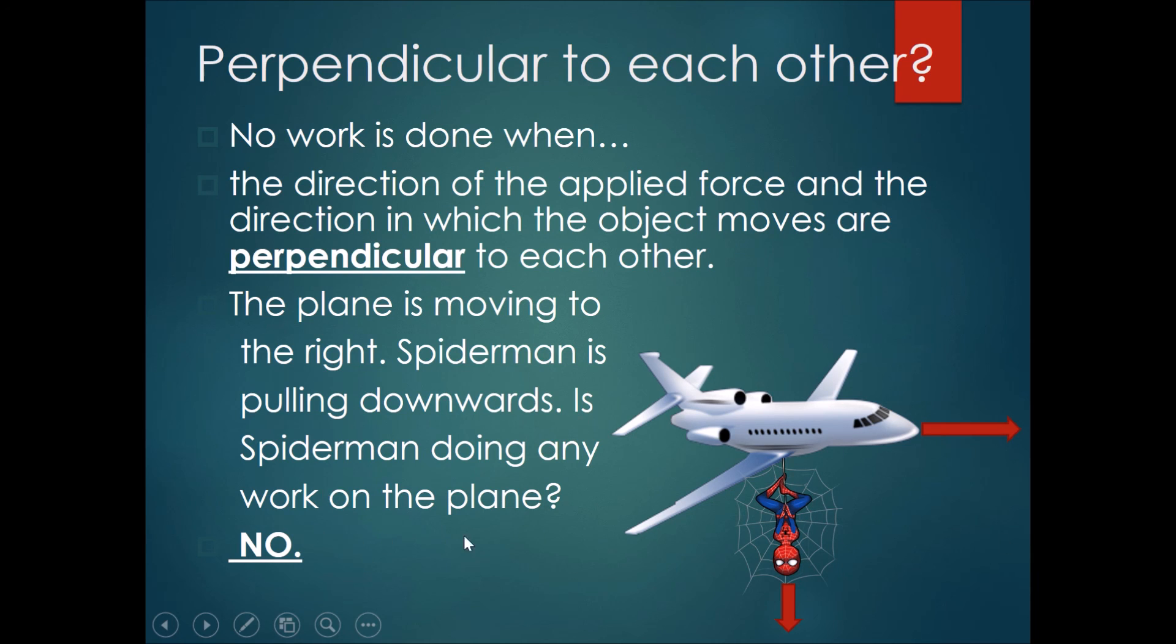The answer is no, because Spider-Man is pulling downwards. However, the plane is not moving downwards in any capacity. It's only moving to the right. Therefore, the plane is not moving towards the direction of Spider-Man's pull at all, so he is not doing any work on the plane.